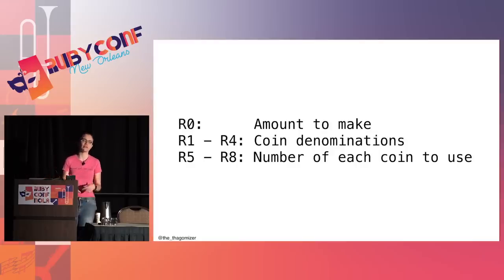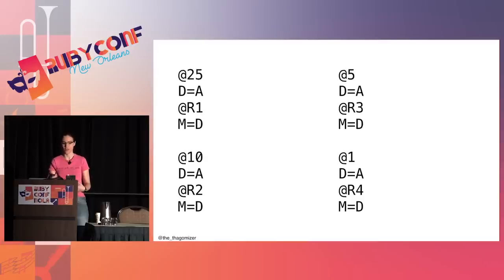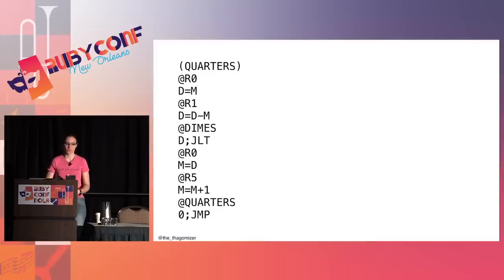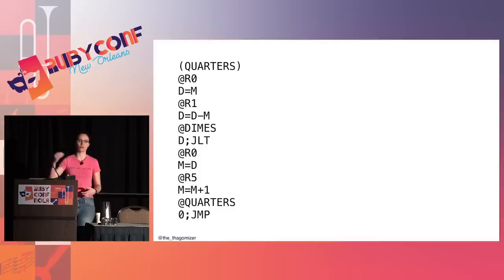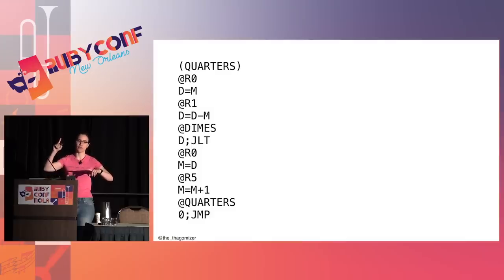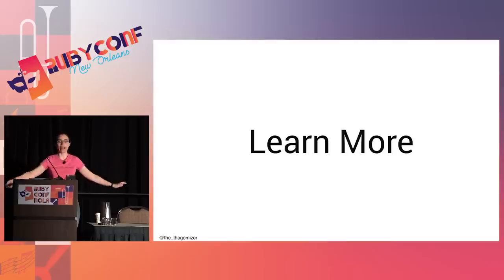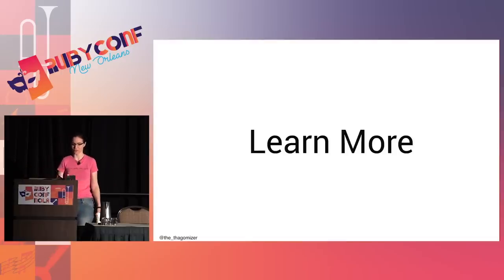Making change in assembly: I use memory cell 0 for the amount to make, memory cells 1 through 4 for coin denominations (25, 10, 5, 1), and memory cells 5 through 8 for the count of each coin used. For each denomination — starting with quarters — I load the amount, load the denomination, subtract; if the result is negative I skip to the next denomination. If not negative, save the remaining amount, increment the coin count, and loop back.